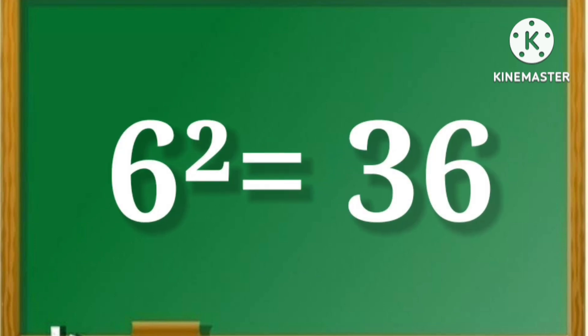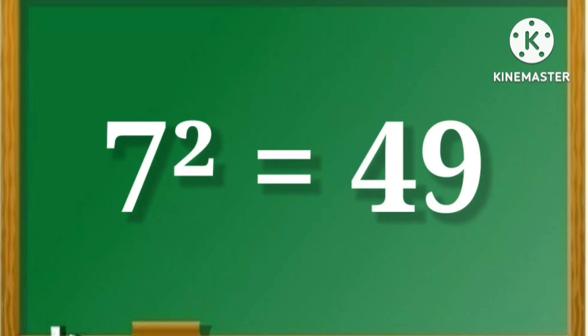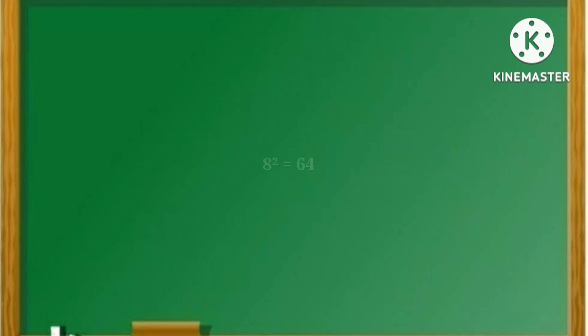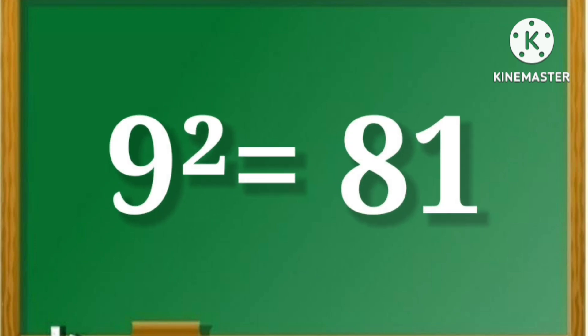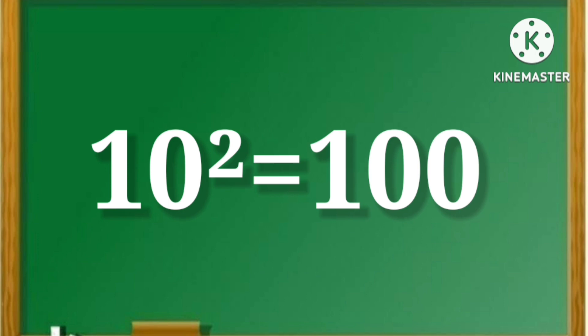6 squared is equal to 36. 7 squared is equal to 49. 8 squared is equal to 64. 9 squared is equal to 81. 10 squared is equal to 100.